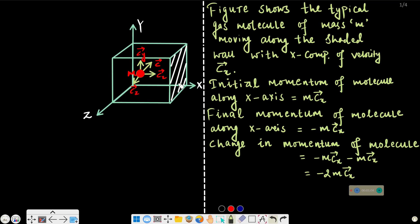This is the wall. This molecule is moving towards this wall along the x-axis. So the initial momentum of the molecule along the x-axis is mass times the velocity, that is mcx vector.